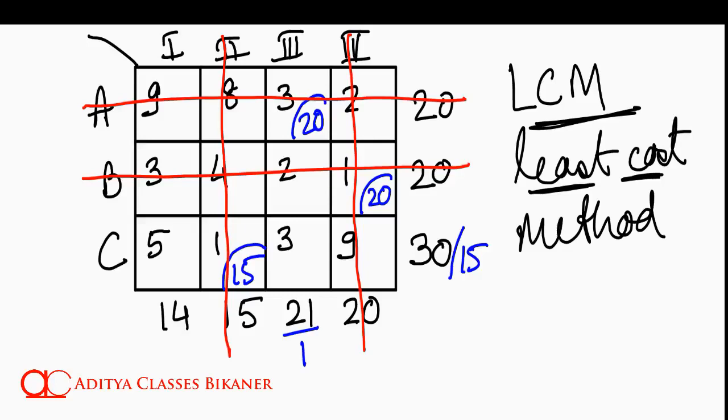Now, if we have a look at our transportation problem. Only this 5 and 3 are left. Of these, which is the least cost? Obviously, it is 3. So, I will go ahead and make an assignment in this 3 rupees cell. So, C still has to supply 15. Third still needs one. They will deal for this one unit. I can remove this.